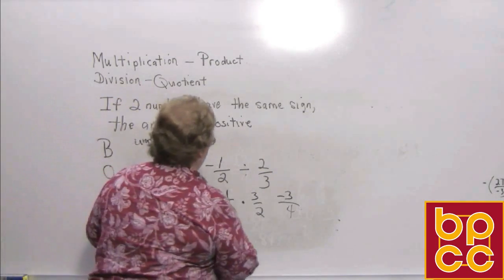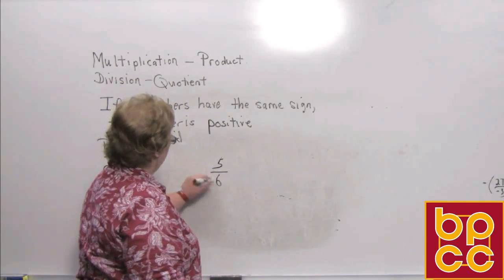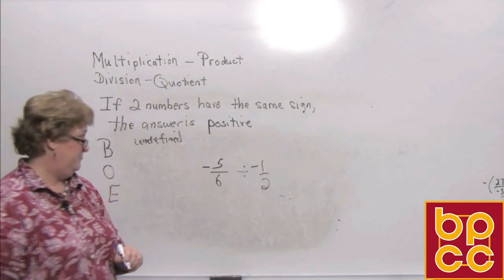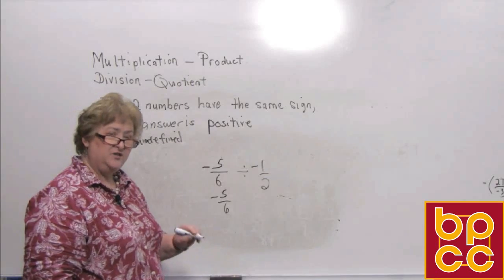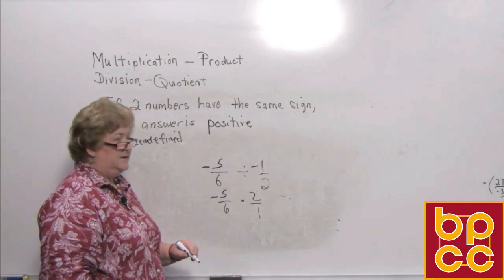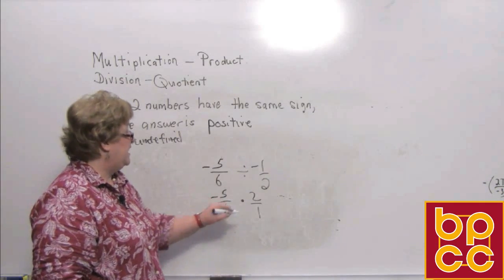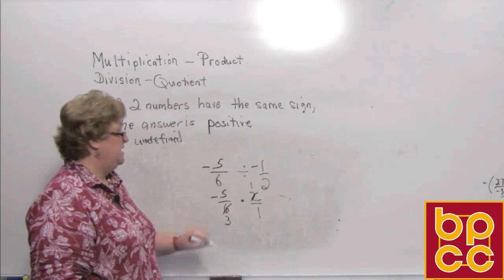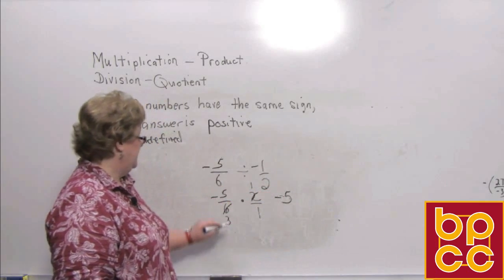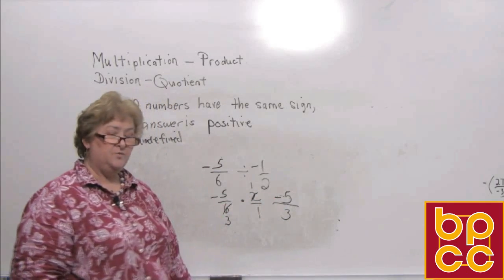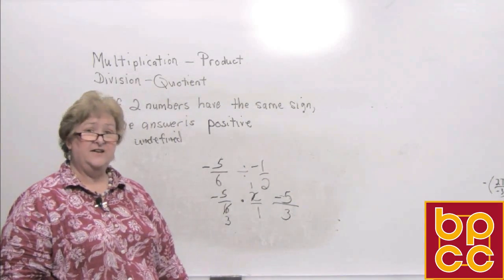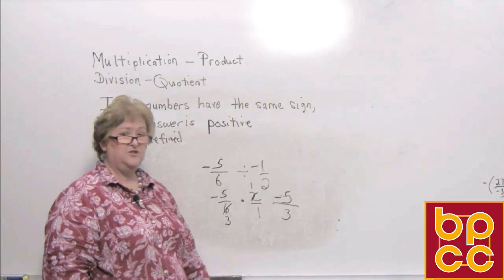Let's try another: negative 5 sixths divided by a negative 1 half. Keep the negative 5 sixths, change division to multiplication, and flip the 1 half to get 2 over 1. To simplify with cross-outs: 2 into 2 is 1, and 2 into 6 is 3. Multiplying top times top and bottom times bottom: negative 5 times 1 is a negative 5, and 3 times 1 is 3. In algebra, it's okay to keep it top-heavy, so the answer is a negative 5 over 3. Today we've learned how to do multiplication and division of signed numbers.